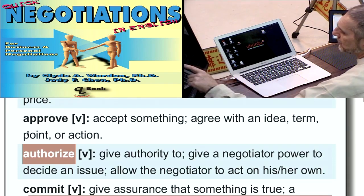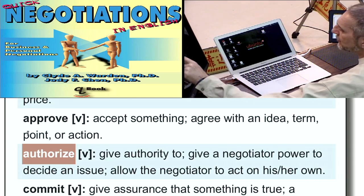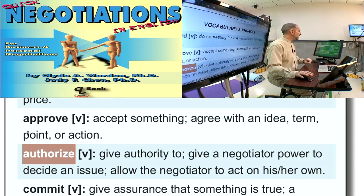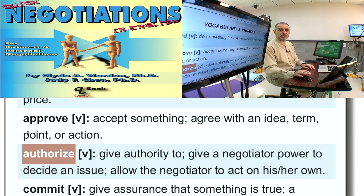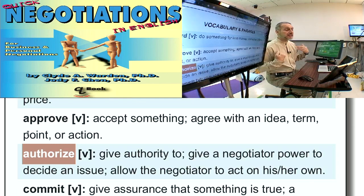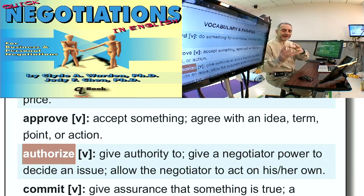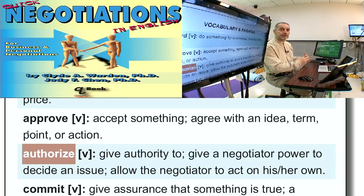Authorize — someone in your company or some manager above you is going to say this is okay. This is a great word to use in your negotiation, because basically you're telling the other side it's not up to me. You're talking to me, but I cannot decide. We can talk now, we can negotiate now, and I need to take this information, and someone else must authorize it.